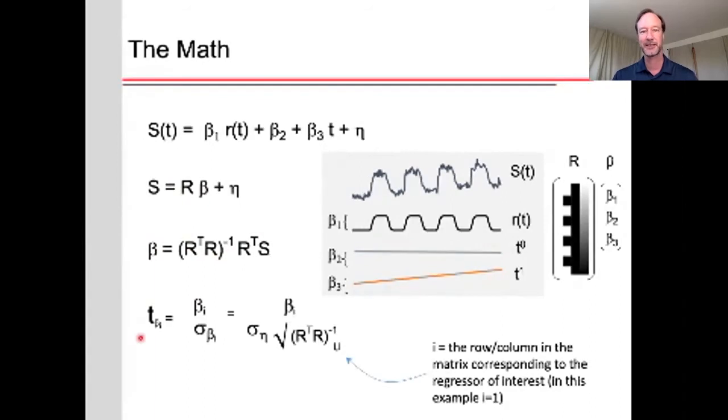Now, the t statistic is actually like a signal to noise measure. It's the activation amplitude, the beta weight that we're interested in for that particular t value, divided by standard deviation of that beta estimate. And the standard deviation of that beta weight is equal to the standard deviation of the noise, multiplied by the square root of the covariance matrix, in particular, that element of the covariance matrix corresponding to this particular beta weight.